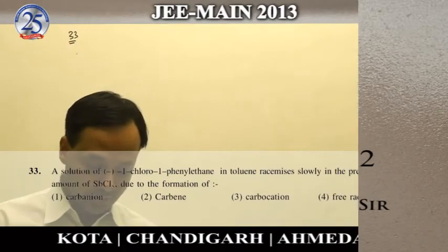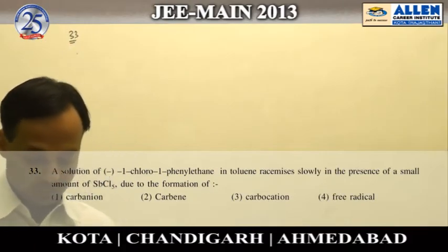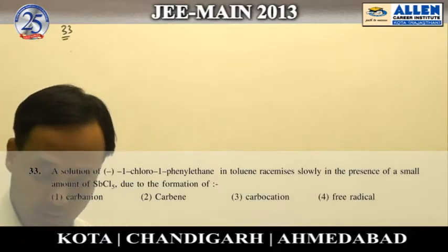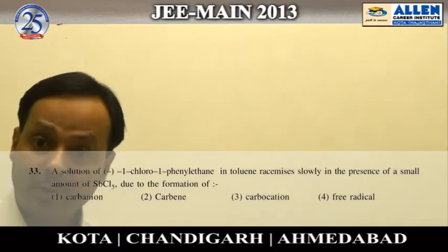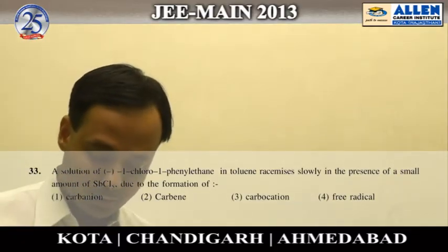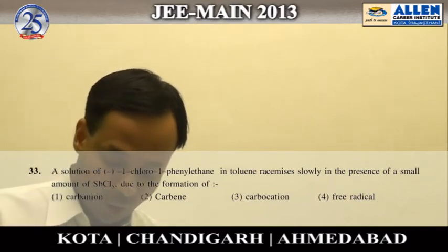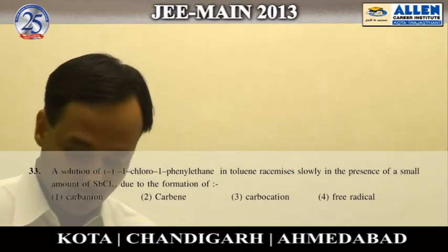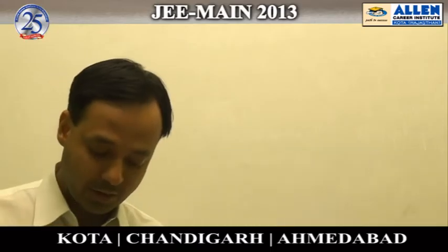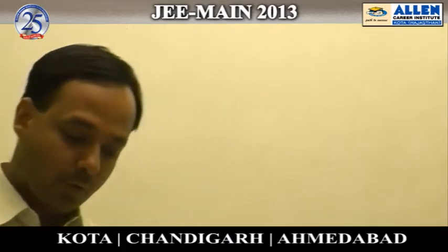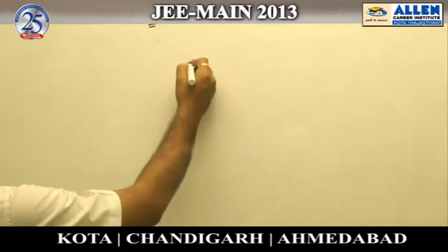Question 33: A solution of 1-chloro-1-phenylethane in toluene racemizes slowly in the presence of a small amount of SbCl5 due to the formation of — four options given: carbanion, carbene, carbocation, or free radical. This question is based on reaction intermediates.